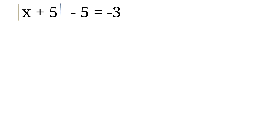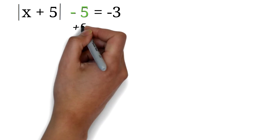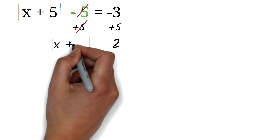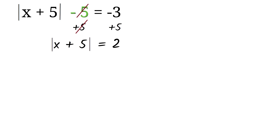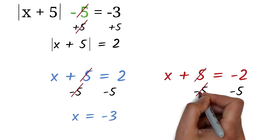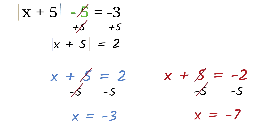The absolute value of x plus 5 minus 5 is negative 3. Find x. This is also very important — do not automatically assume that a negative on one side means there is no solution. First, get rid of the negative 5 by adding 5 to both sides: negative 3 plus 5 is 2. Now we have the absolute value of x plus 5 equals 2, which is positive, so this has a solution. We get x plus 5 equals 2 or x plus 5 equals negative 2, giving x equals negative 3 or x equals negative 7.